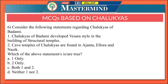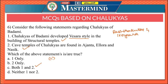The sixth question: the Chalukyas of Badami developed the Vesara style in the building of structural temples, and cave temples of the Chalukyas are found in Ajanta, Ellora, and Nasik. Both statements are correct, Option C. The Chalukyas were great patrons of art and developed the Vesara style, though it reached its culmination only under the Rashtrakutas and Hoysalas. The structural temples of the Chalukyas exist at Aihole, Badami, and Pattadakal.